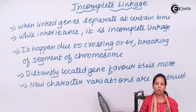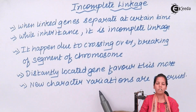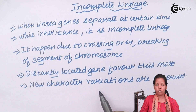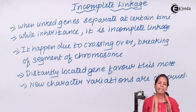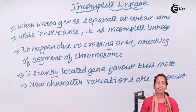Crossing over, whether it is in completely linked or incompletely linked genes, decides the genetic characteristics or variation in characteristics. Changes during crossing over are very crucial for differences in appearance, whether genotypically or phenotypically. In this part of the chapter we studied incomplete linkage and how it works. I hope you are very clear with this concept. Thank you.